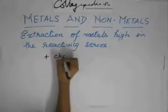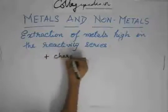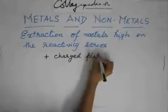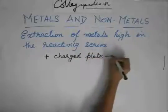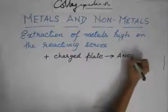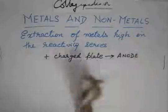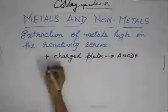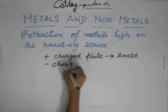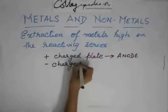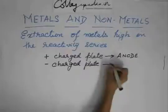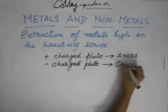The positively charged plate will be called the anode, because A stands for addition, so plus. And automatically the negatively charged plate will be called the cathode.